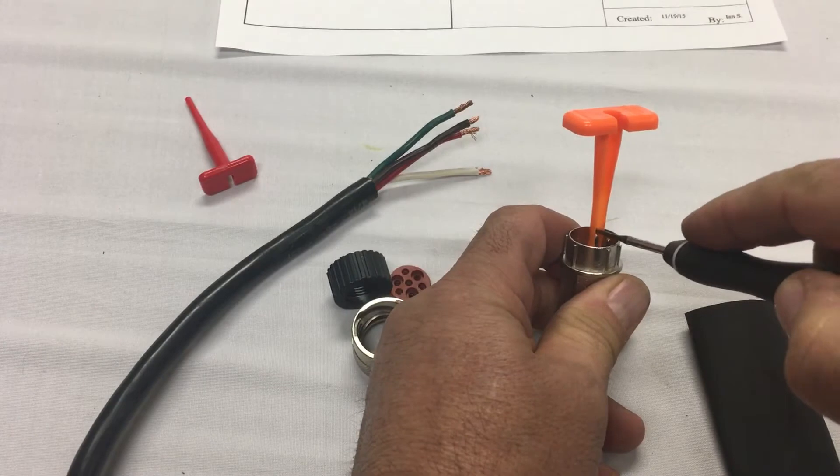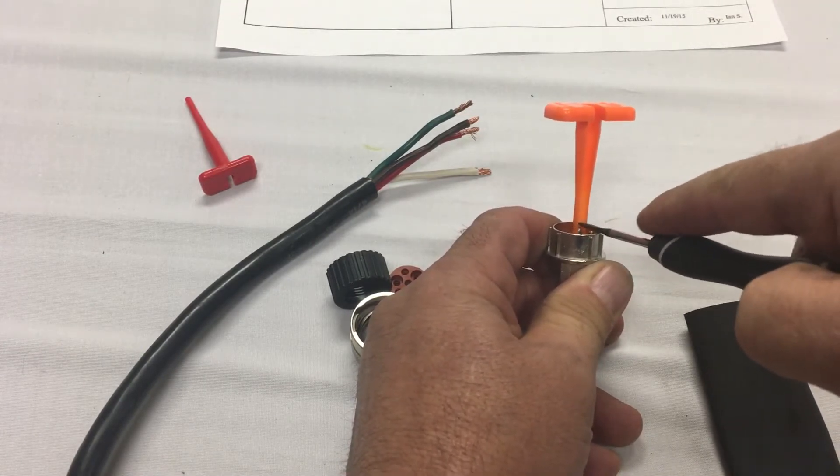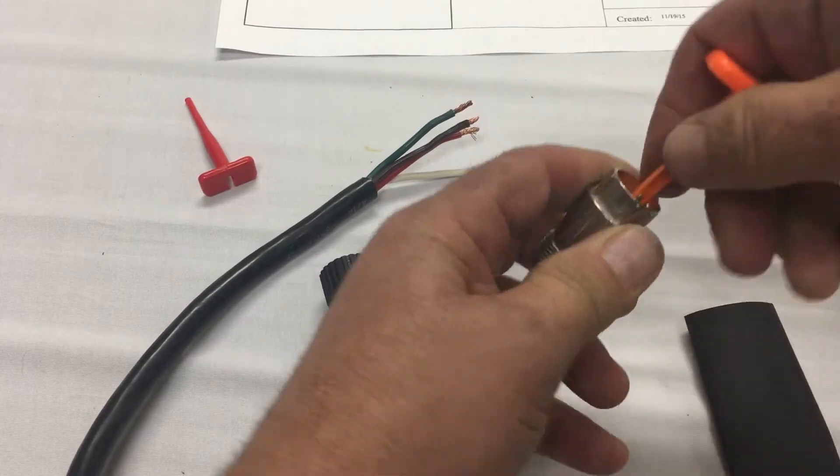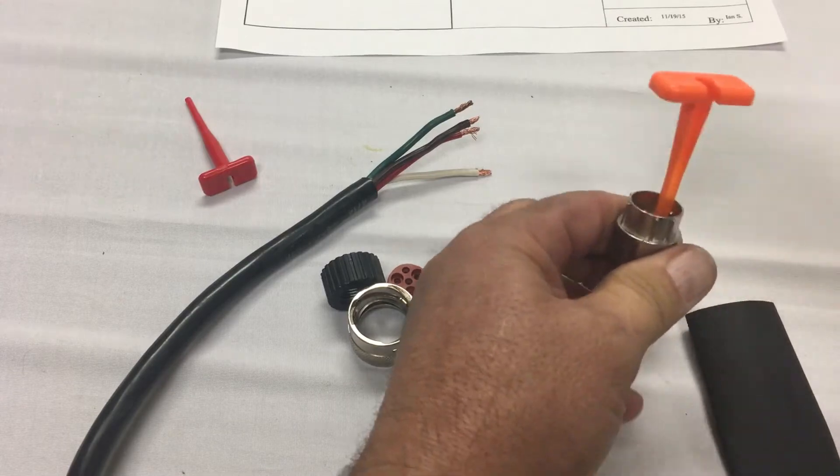Same thing here. The orange tool is the larger gauge pin, which is your power pins. Same thing, I just want to push them until they click. So it's not set yet. There we go, you can feel it just kind of click into place, and then the pin will just drop right out.